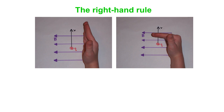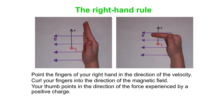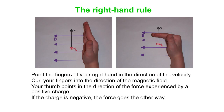Here's a picture: fingers on the right hand are in the direction of V (the velocity), and the palm points in the direction of the field. You can curl your fingers there, and the thumb points in the direction of the force — out of the screen. Don't forget the force goes the other way if the charge is negative. And that is it for our summary of the force a charged particle feels when it's in a magnetic field.